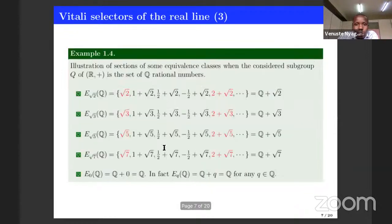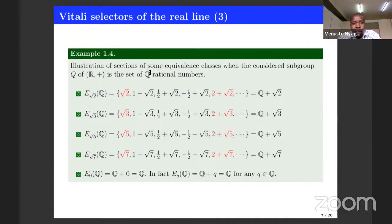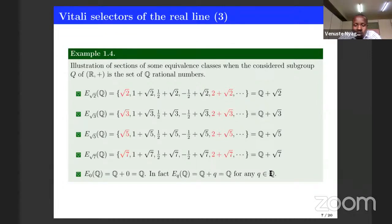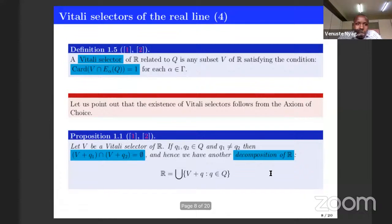Since each equivalence class is a translation of a given element, I have highlighted some examples of equivalence classes. For instance, when our subgroup is the rational numbers, the equivalence class of square root of two is obtained by translating Q by square root of two. However, whenever you take an element which belongs to Q, its equivalence class is just Q itself, because adding two rational numbers keeps you inside Q. By a Vitali selector, we mean any subset of the real numbers which contains just one element from each equivalence class.